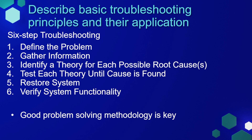The six steps are: define the problem, gather information, identify a theory for each possible root cause, test each theory until a cause is found, restore the system, and then verify the system is functional. Having a good problem-solving methodology is key to finding these bugs and getting rid of them as quickly and effectively as possible. One thing we don't want is to fix a bug and then create more bugs with that fix.